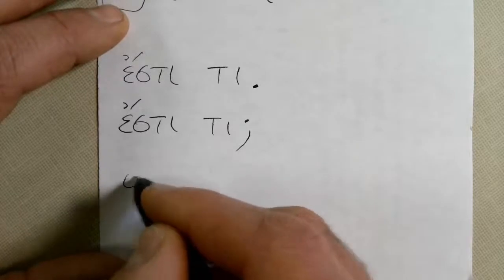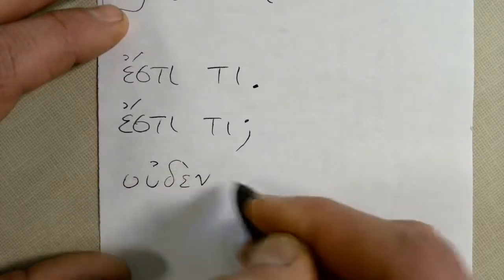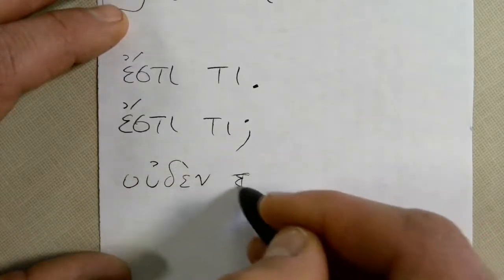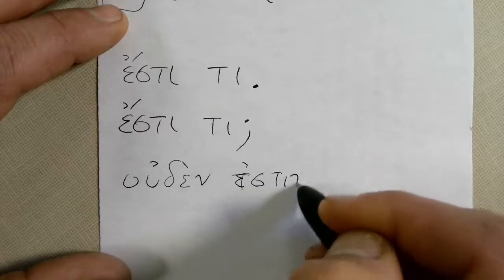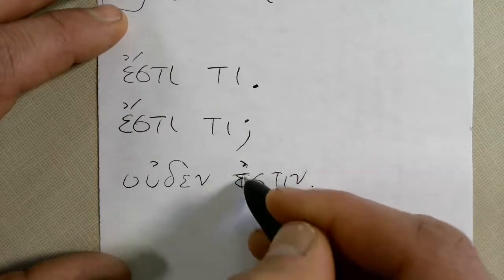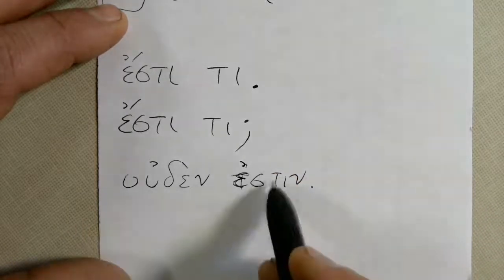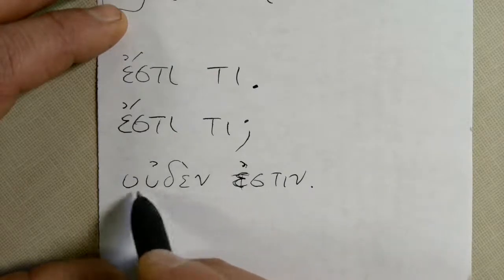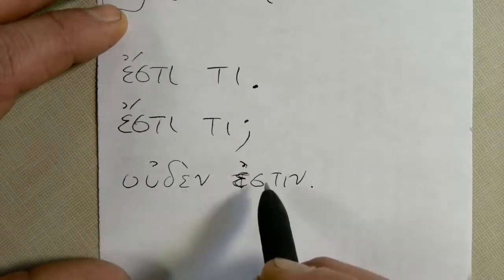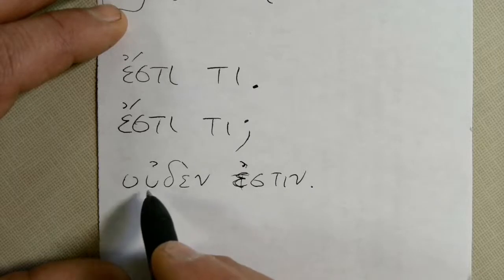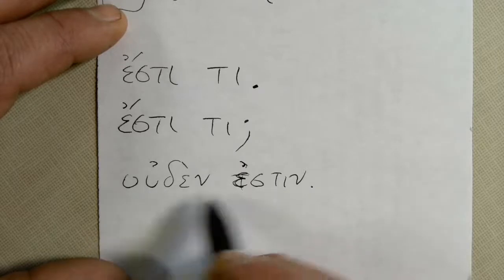Now if there's nothing, then you're going to say this. You're going to say u-then esti-ti. U-then esti-ti. There is nothing. U-then means nothing. Esti-ti means there is. So u-then esti-ti, there is nothing.